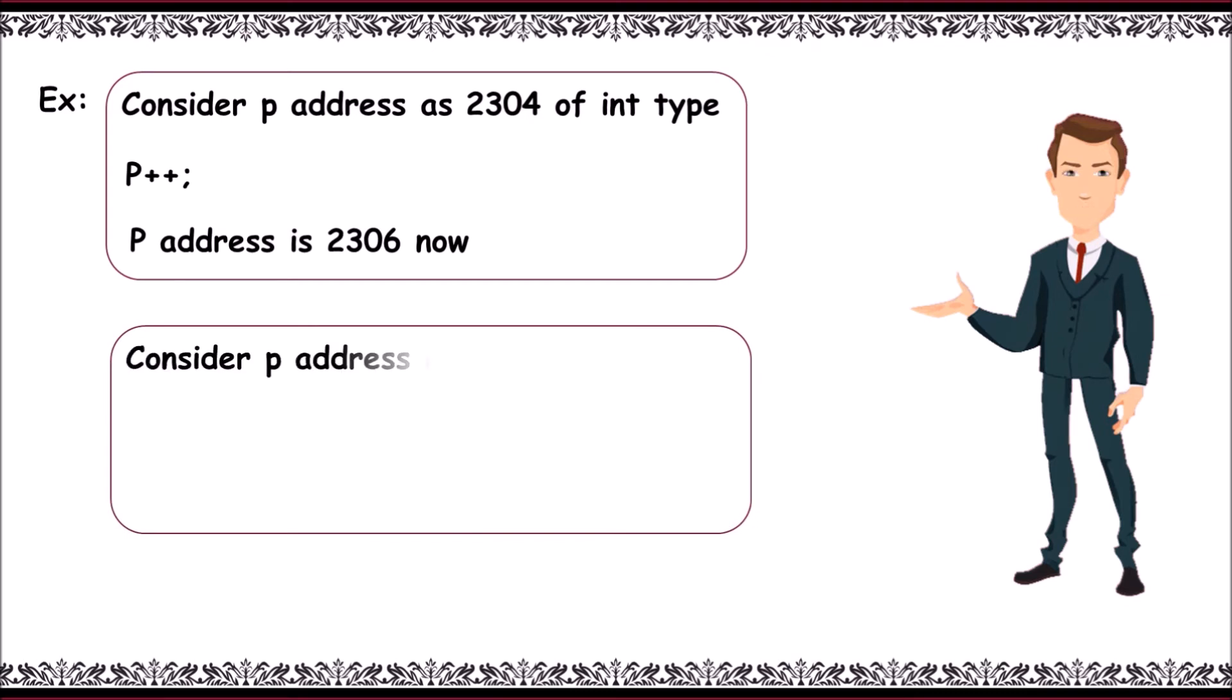Consider p address as 2304 of int type. Next, on decrementing it, that is p minus minus, p address is 2302.